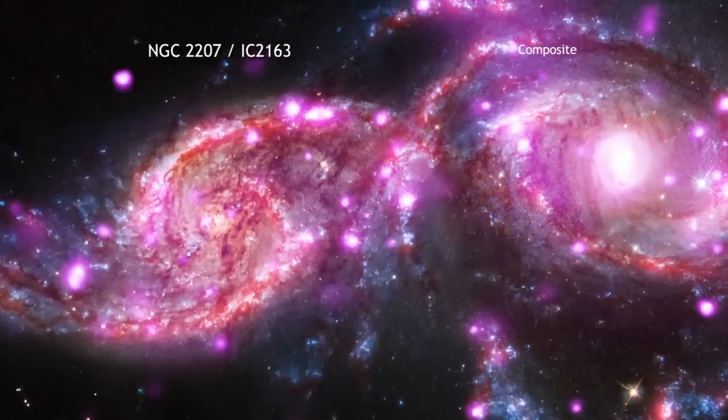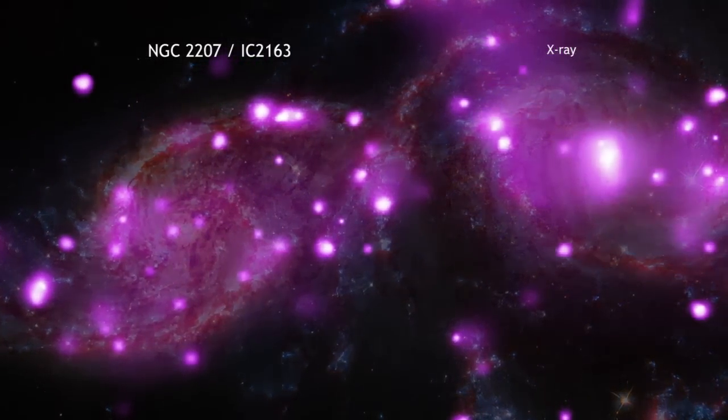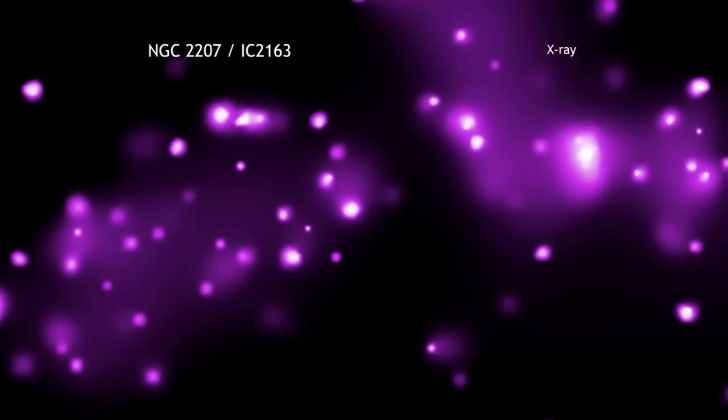These special objects, officially known as ultraluminous X-ray sources, or ULXs, have been found using data from NASA's Chandra X-ray Observatory.